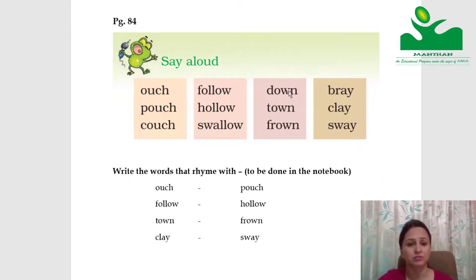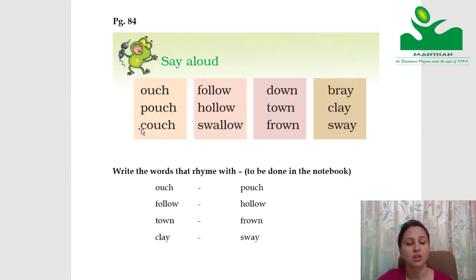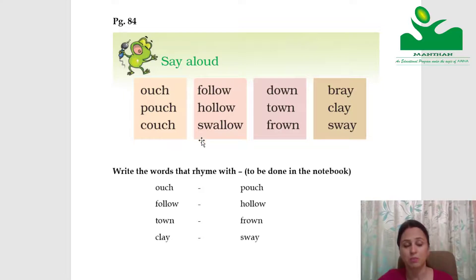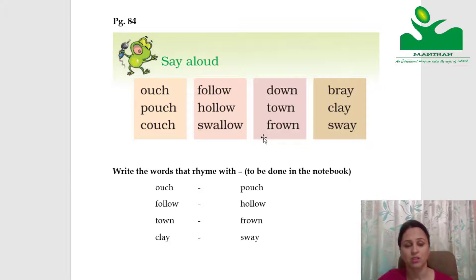On page number 84, you have to read these words aloud. I'll read them for you once, then you practice: out, pouch, couch, follow, hollow, swallow. Mind the spellings carefully, even though they rhyme the spellings are different. Down, town, frown, break, play, sway.